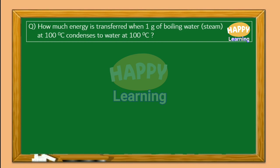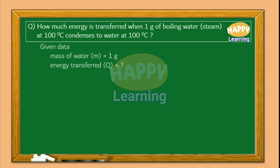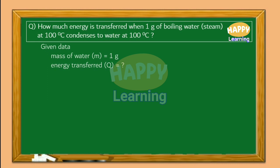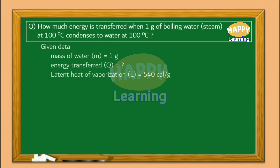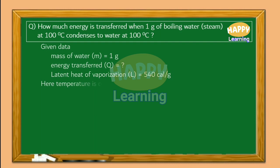Let us write down the given data. Mass of water M is equal to 1 gram. Energy transferred Q is equal to question mark — we need to find it. As the steam is condensed to water, we need the latent heat of vaporization. Its value is L equal to 540 calories per gram. Since temperature is constant and only phase change is taking place, the formula we need is Q equal to M L.